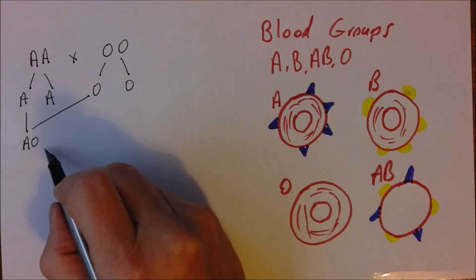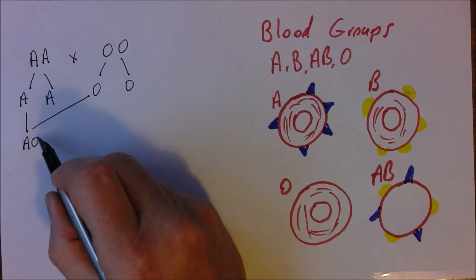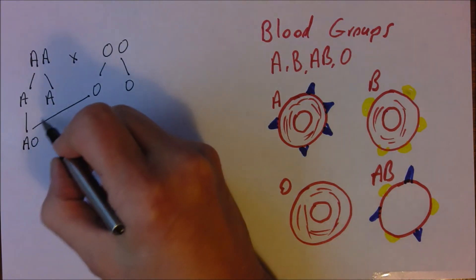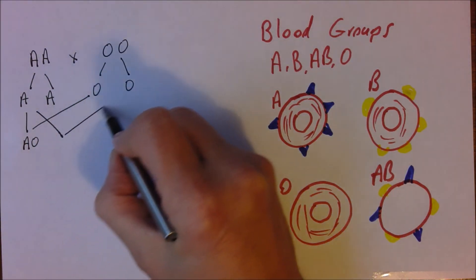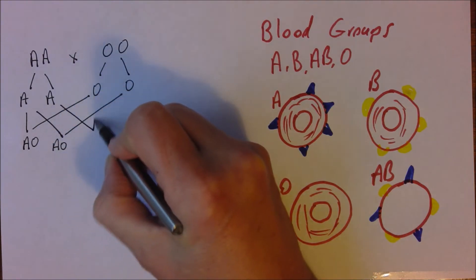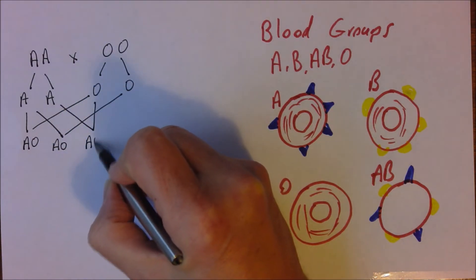Now because the A antigen or because the A allele codes for the A antigen, the A is dominant. So AO, that person phenotypically will be blood group A. And it's going to be the same for that one. I think you can see it's actually going to be the same for all of these.